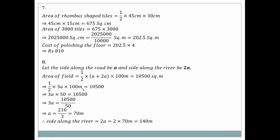Question number eight: A trapezoidal field. Area of field = half × (a + b) × h. The parallel sides are related — one side = twice the other. Given area = 10,500, height = 100 meters. So half × (a + 2a) × 100 = 10,500, giving 3a × 50 = 10,500, so a = 70 meters.